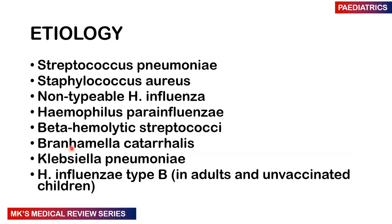Other causes include Streptococcus pneumoniae, Staphylococcus aureus, non-typable Haemophilus influenzae, Haemophilus para-influenzae, beta-haemolytic streptococci, Branhamella catarrhalis, Klebsiella pneumoniae, as well as Haemophilus influenzae type B — most commonly in children that are unvaccinated and in adults.